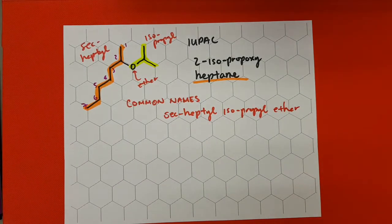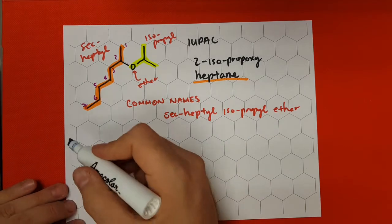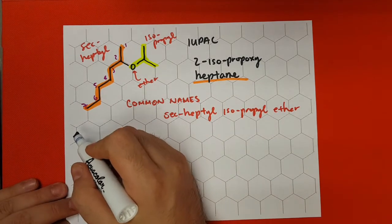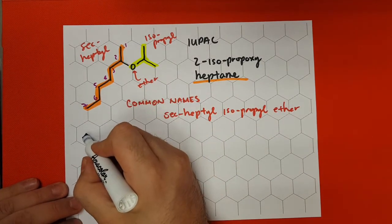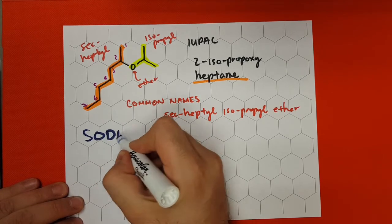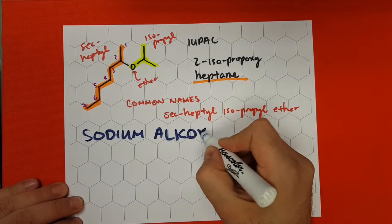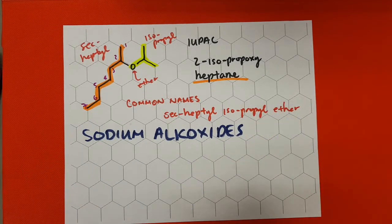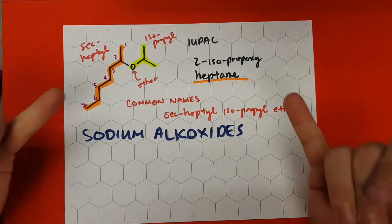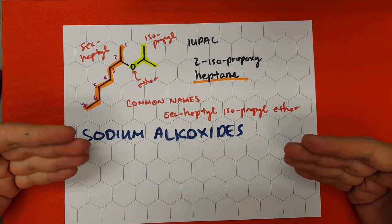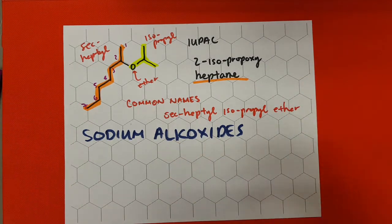One last thing in this video that we're going to see is just some salts made with these alkoxy groups. So we're going to call them sodium alkoxides. If you notice, it's the same thing: we have alkyl, then we have alkoxy, and then we have alkoxide. So it's going to follow the same naming structure.